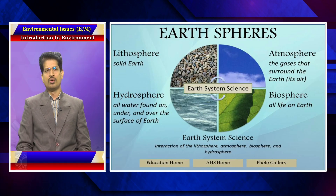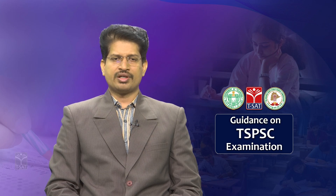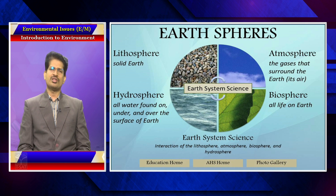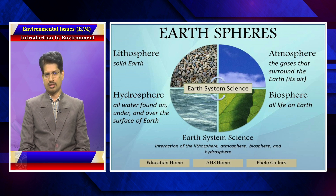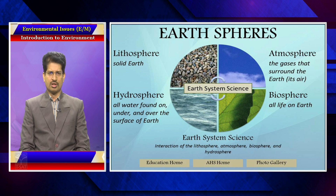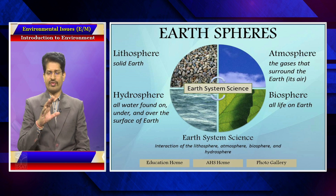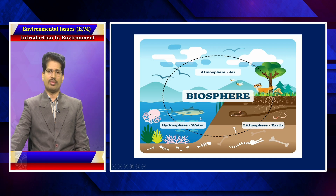Before getting into the environment, we need to know the different spheres of environment. Atmosphere is a sphere of environment. Biosphere is another sphere — bio means life, so plants, animals, and microbes constitute the biosphere. Atmosphere consists of the air composition. The hydrosphere constitutes the water bodies — the oceans, rivers, and lakes. The lithosphere constitutes the soil and rocks. When we study all these aspects, environmental aspects can be understood in a holistic manner. These are the different spheres that interact for the survival of the ecosystem.